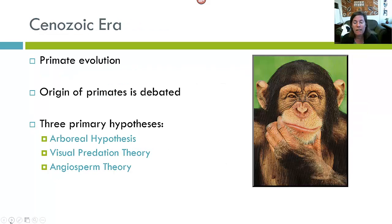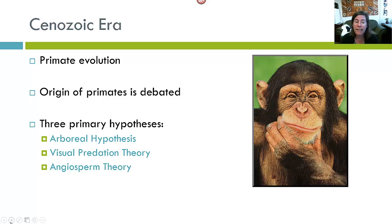The Cenozoic is the fourth era. Remember we had the Precambrian, the Paleozoic, the Mesozoic, and now the Cenozoic. The Cenozoic is probably the most important era for this class because it is the era when primates evolved. The origin of primates is highly debated — a very contentious issue in anthropology. There are three primary hypotheses proposed to account for the origin of primates: the arboreal hypothesis, the visual predation theory, and the angiosperm theory.